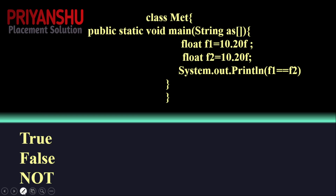The next question: you have two variables — float f1 = 10.20 and f2 = 10.20. What is the output of System.out.println(f1 == f2)? The correct answer is true, because both are treated as the same value.